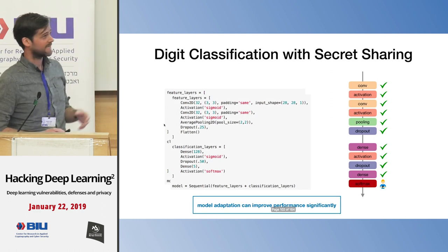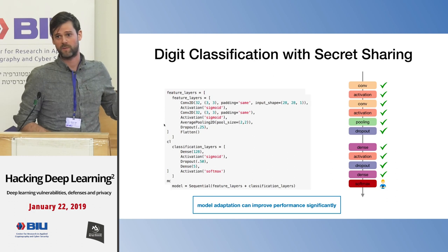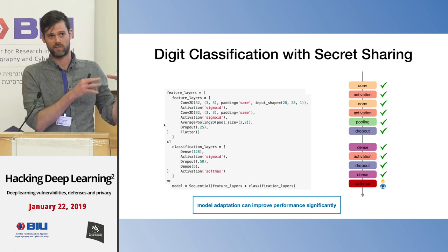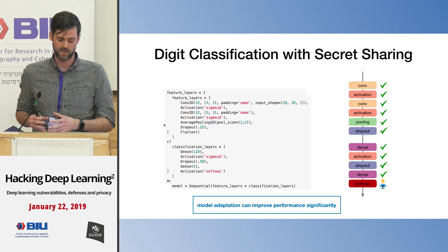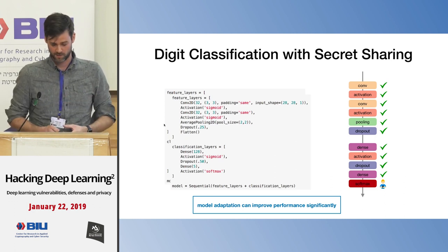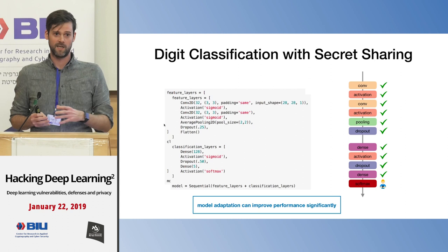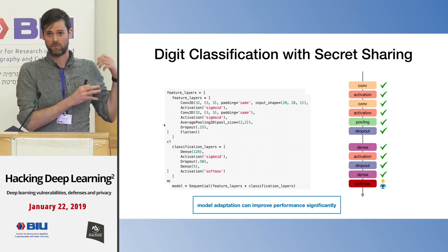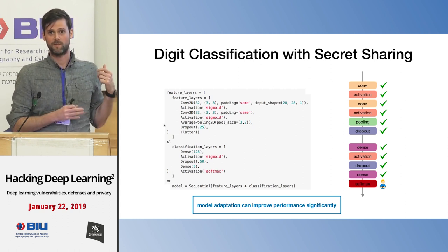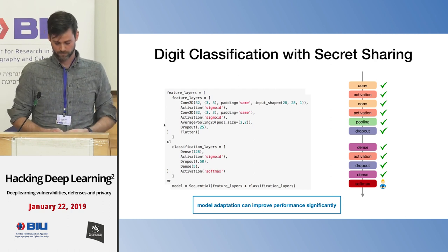The key takeaway is that adapting models to work in encrypted space can significantly improve performance. You can take an existing model and get much better performance if you're willing to adapt it slightly. So far it's been about optimizing the cryptography, but now it starts to be about machine learning practitioners also optimizing models for the encrypted space.